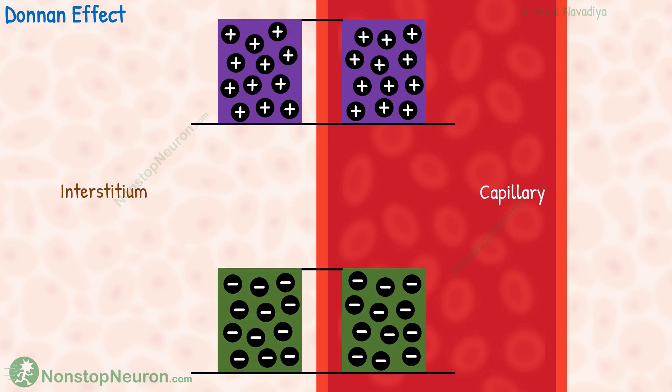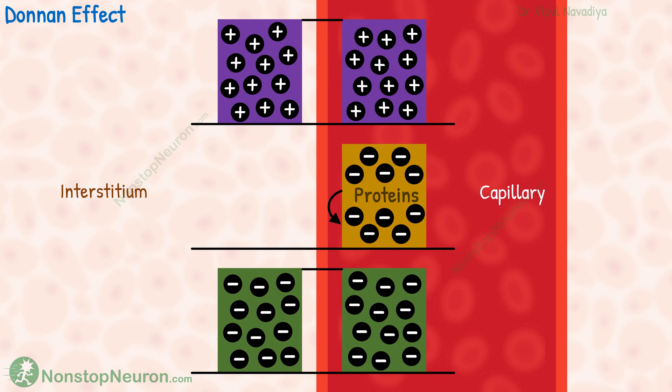But this in fact was a simplification. Here we ignored the effect of negative charge on the proteins. We know that the capillary wall is almost impermeable to proteins, right? So proteins mostly stay in the plasma only.